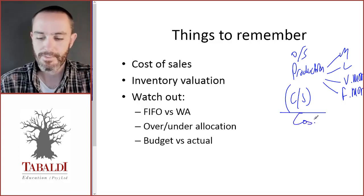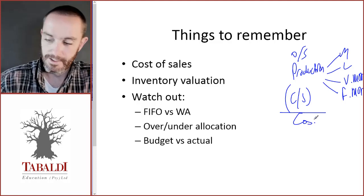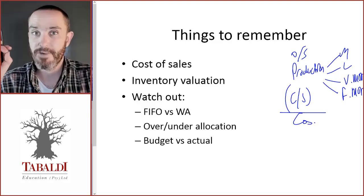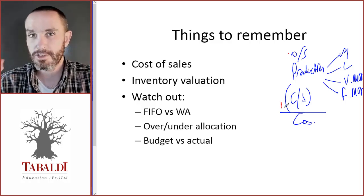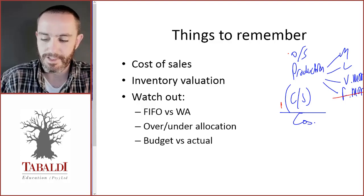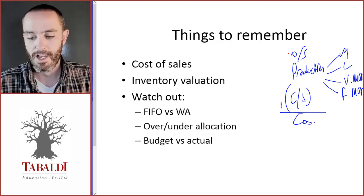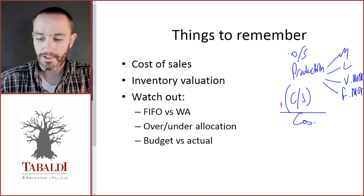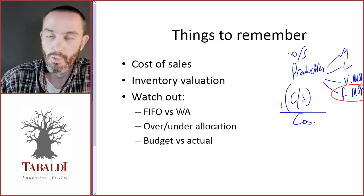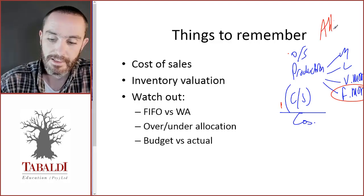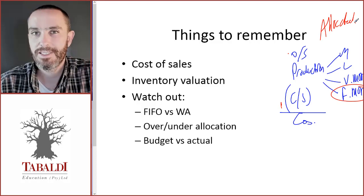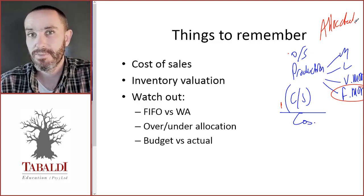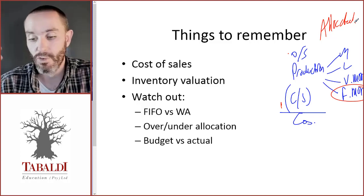That will give us our cost of sales. Remember that if we are busy with a variable costing income statement, this will be our variable cost of sales, so opening and closing inventory will not include fixed manufacturing overheads and we will not have the line item for fixed manufacturing overheads. For absorption costing, we include fixed manufacturing overheads, and this amount will be the allocated fixed manufacturing overheads — that is the actual number of units produced times the predetermined overhead allocation rate, calculated using budgeted figures and normal capacity.